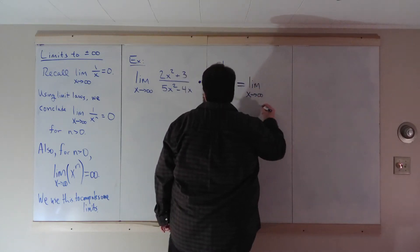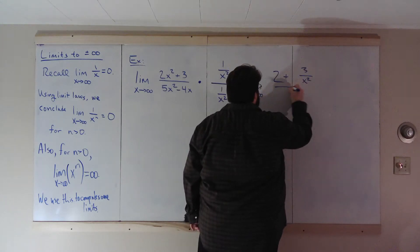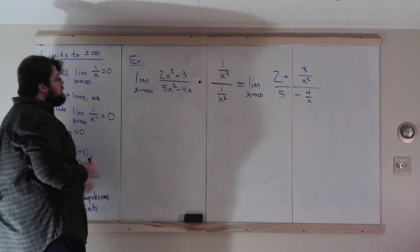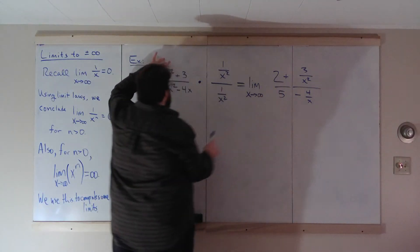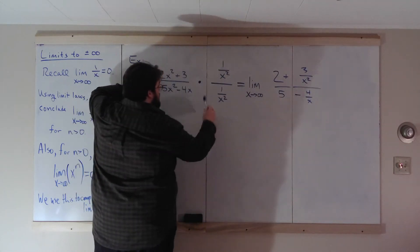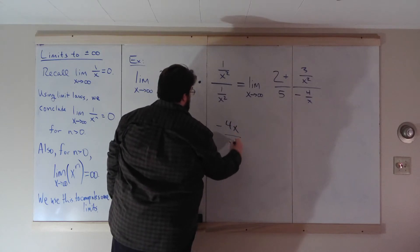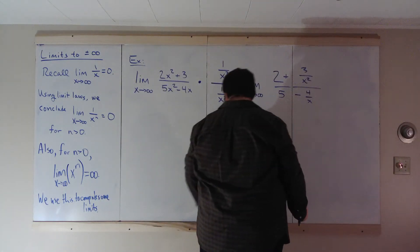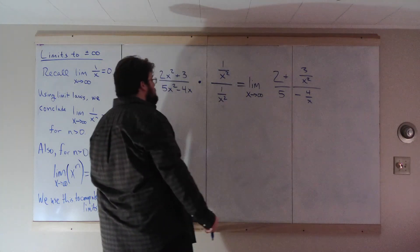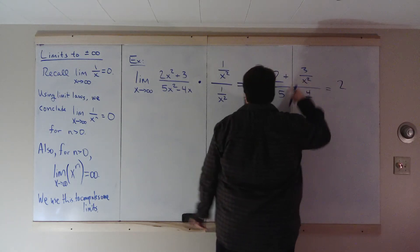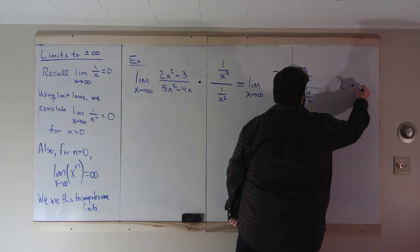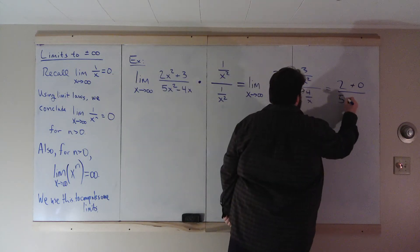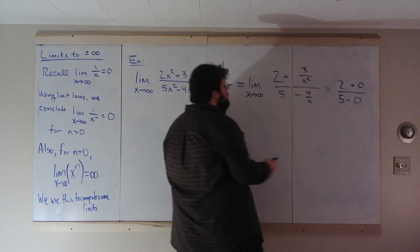This equals the limit as x goes to infinity of (2 + 3/x²) all over (5 − 4/x). Distributing: 2x²/x² = 2, 3/x² stays as 3/x², 5x²/x² = 5, and −4x/x² = −4/x. Now applying limit laws piece by piece: you get 2 + 3·0 over 5 − 0.